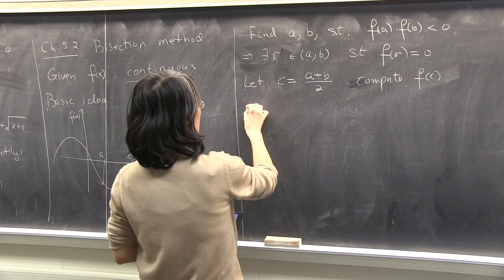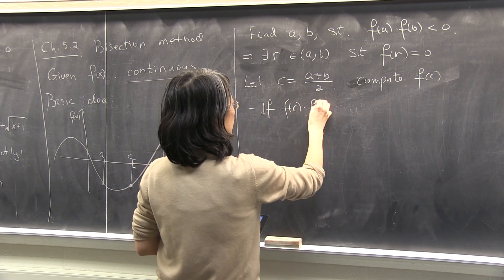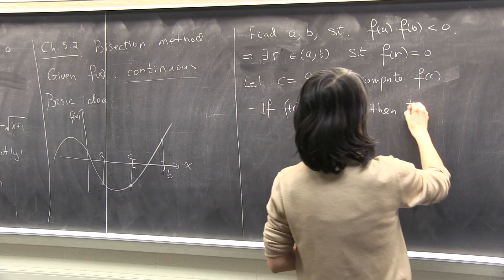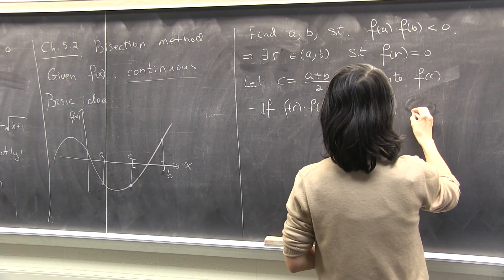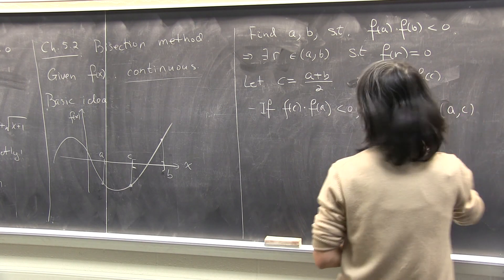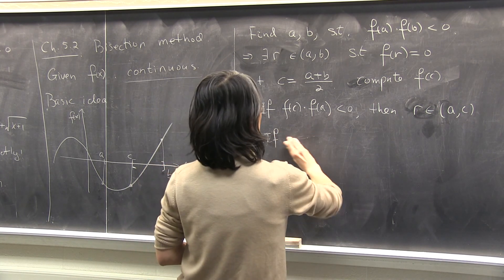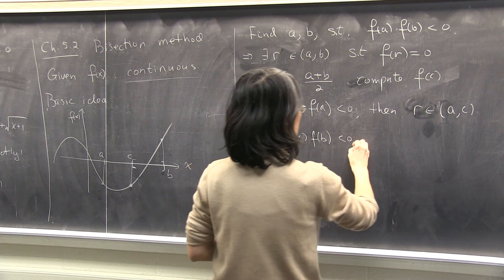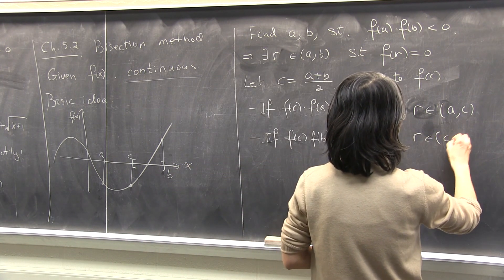So I have to do a discussion. If f of c times f of a is less than zero, then I can conclude that r, there will be r on the interval from a to c, otherwise, if f of c times f of b is less than zero, then r is on the interval from c to b.